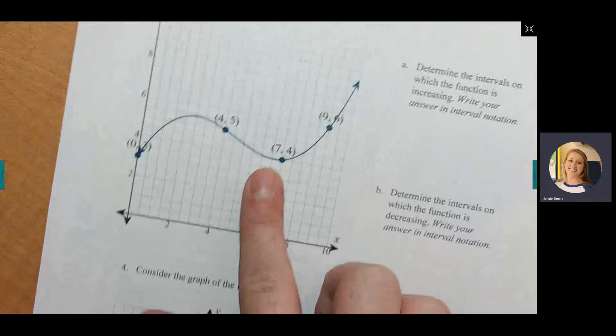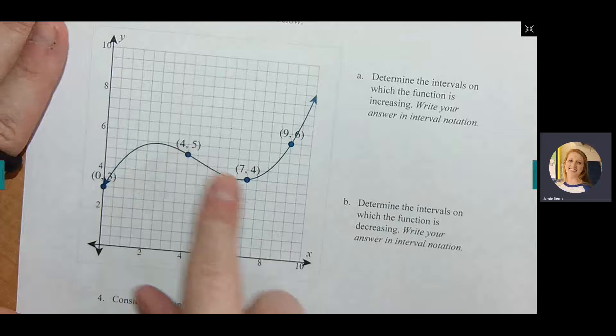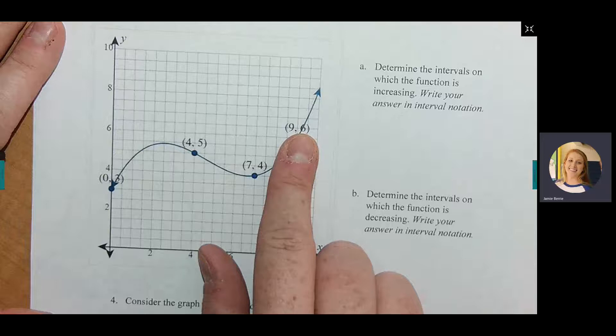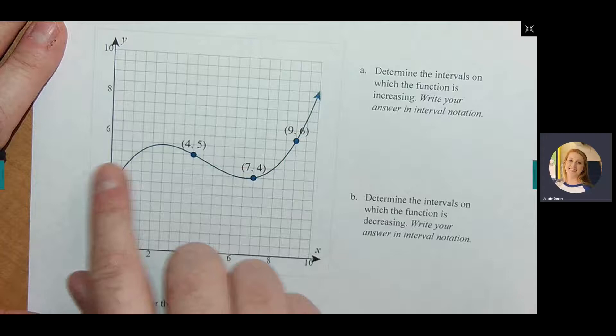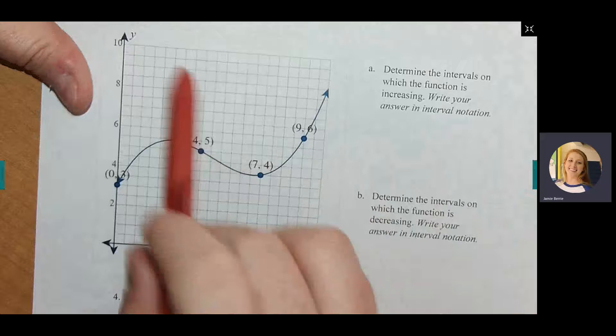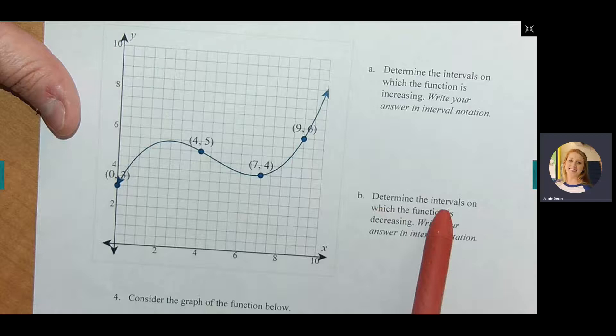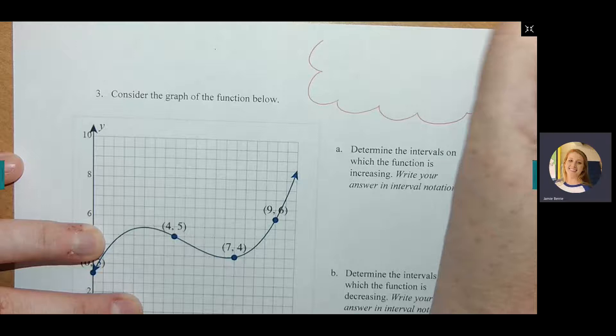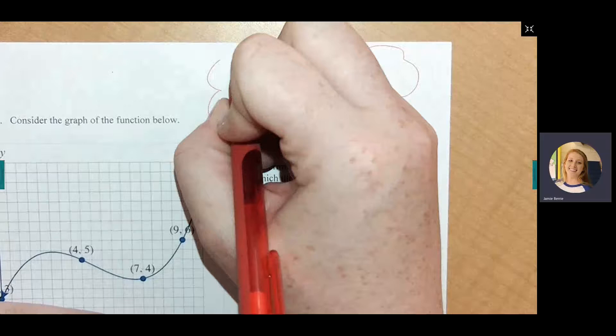Number 3 will definitely be on the test, though not this exact graph. It says consider the graph of the function below. Determine the intervals on which the function is increasing, and the intervals on which it is decreasing. There are three things to remember when doing these increasing/decreasing/constant problems — this might be something to add to your formula sheet.